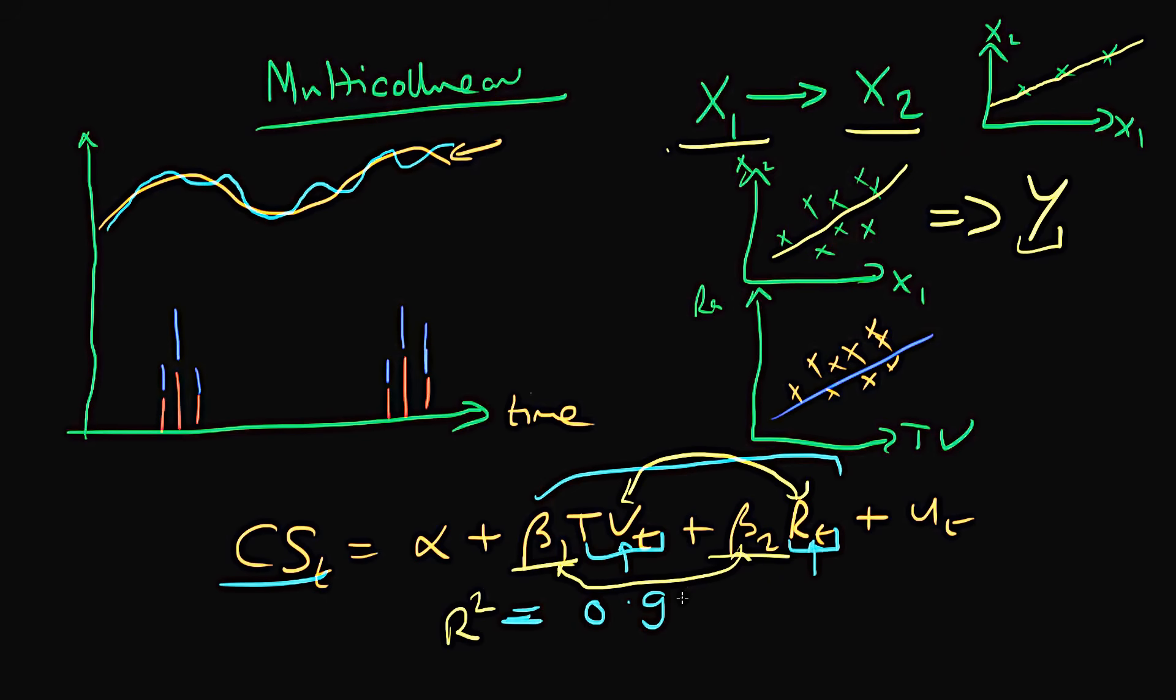In a sense, we haven't made a very good experiment here because of the fact that we have TV advertising and radio advertising being very correlated with one another. We don't really have a control region whereby we have some TV happening on its own or we have some radio happening on its own as well. So it's very difficult for us to disentangle the effect of TV from radio.